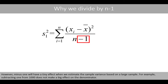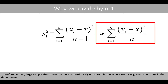However, minus 1 will have a tiny effect when we estimate the sample variance based on a large sample. For example, subtracting 1 from 1000 does not make a big effect on the denominator. Therefore, for very large sample sizes, the equation is approximately equal to the one where we have ignored minus 1 in the denominator.